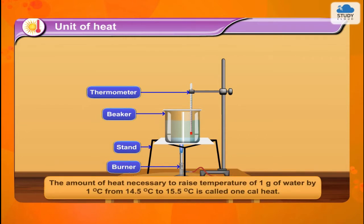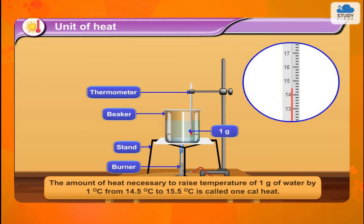The amount of heat necessary to raise the temperature of 1 gram of water by 1 degree Celsius from 14.5 degrees Celsius to 15.5 degrees Celsius is called one calorie of heat.